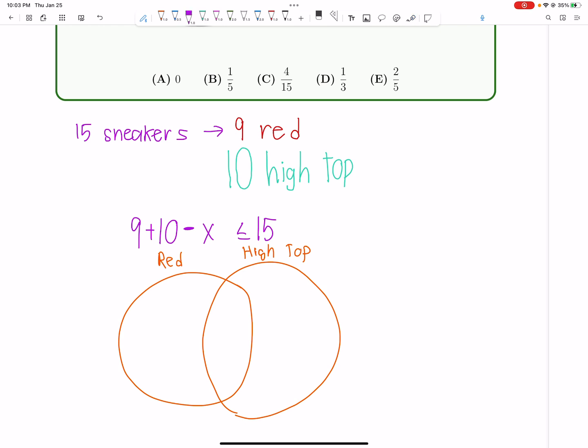And it turns out that if we're really trying to minimize the number of overlap, then it turns out that it is actually best to have no shoes that are both not red and not high-top. So we have this inequality here.